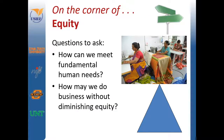Let's start on the first side of the pyramid with equity. Equity refers to social well-being, and among the three P's of people, planet, and profit, this refers to people. When considering equity in the triple bottom line, questions to ask include: how can we meet fundamental human needs, and how may we do business without diminishing equity?